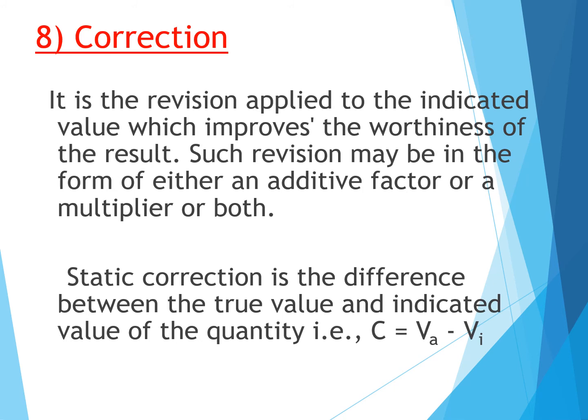Next is corrections. It is the revision applied to the indicated value which improves the accuracy of the result. Such revision may be in the form of either an additive factor or a multiplier or both. The correction equation is: C = VA − VI, that is, true value minus indicated value. VA is the true value, VI is the indicated value, and their difference is known as correction.